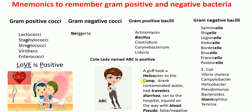So the full mnemonic: a guy took a helicopter to the camp, drank contaminated water, had severe diarrhea, ran to the hospital, got injured on the way with blood coming out, and everything that happened to this guy was negative — false or pseudo. Guy Y = Yersinia, Helicopter = Helicobacter, Camp = Campylobacter, traveler's diarrhea = E. coli and Vibrio cholera, blood = Hemophilus, and Pseudomonas. I hope this video was helpful. Please like, share, and subscribe. Thank you.